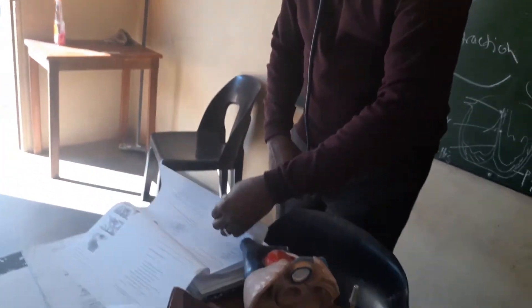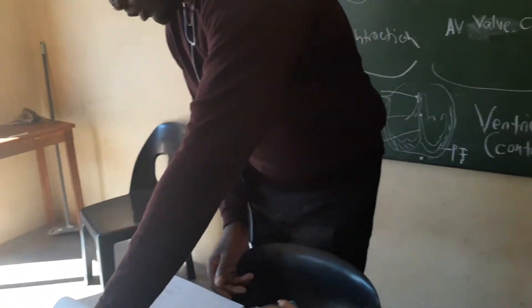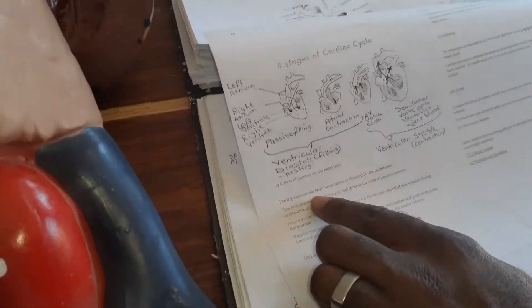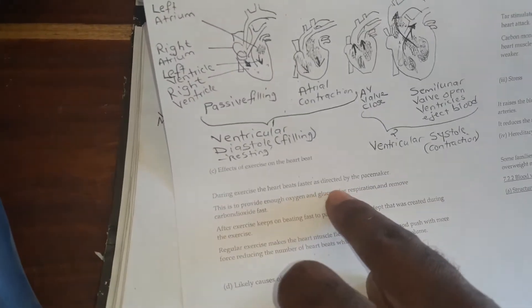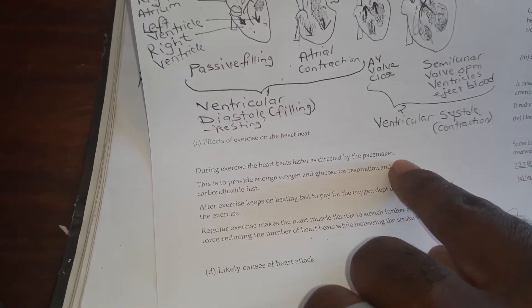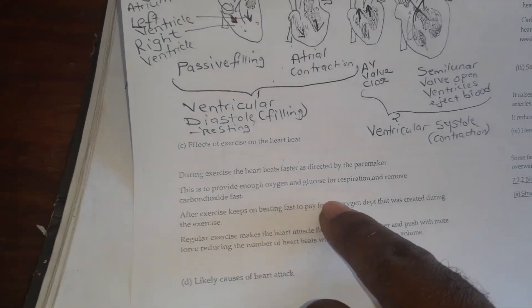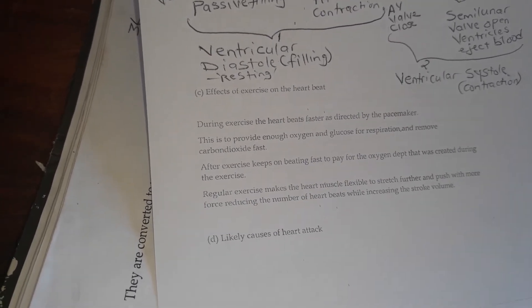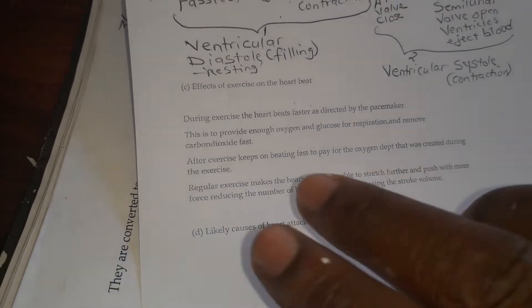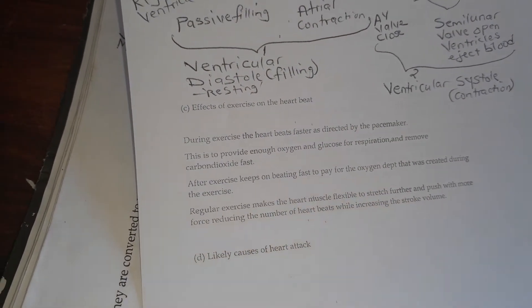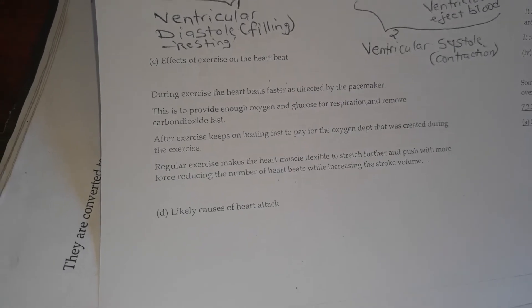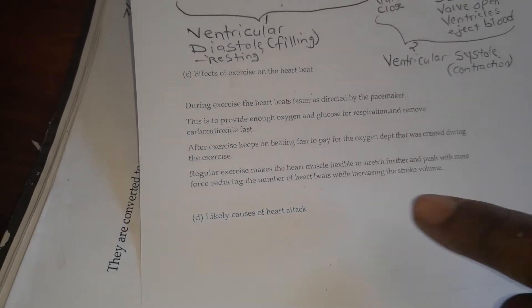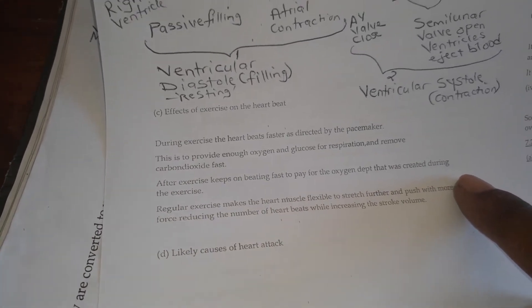That is the sequence of the heartbeat. Now let's go to the effects of exercise. During exercise, the heart beats faster as directed by the pacemaker — which is the sinoatrial node. This is to provide enough oxygen and glucose for respiration and remove carbon dioxide, so that you don't collapse or run short of energy. After exercise, your heart will keep on beating fast to pay the oxygen debt.